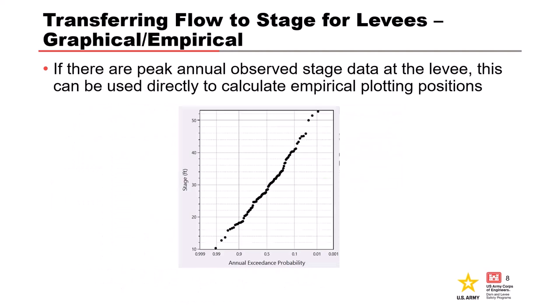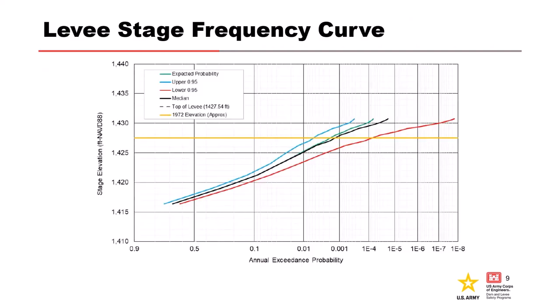Oftentimes the observed empirical plotting positions are plotted with the stage frequency curve calculated from the flow frequency and rating curves for comparison and calibration. What's shown here is the observed maximum stages for a specific location with viable plotting positions, which we talked about on day one. This final stage frequency curve — including uncertainty — was produced by evaluating flow frequency curves and using hydraulic modeling to model peak elevations at a particular station along a levee for a range of different annual exceedance probabilities. The modeled relationship between flow and stage was used to convert the flow frequency curves to the stage frequency curves, picking points of flow on your flow frequency curve, going to your rating curve, and plotting that as your stage frequency curve using the uncertainty bounds and the expected value.